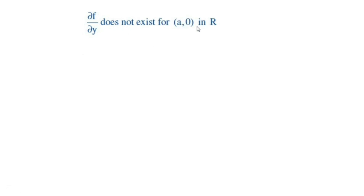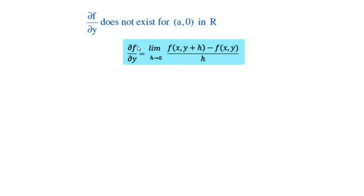For this, we define the partial derivative of f with respect to y, keeping x as a constant: ∂f/∂y = lim(h→0) [f(x, y+h) - f(x, y)] / h.